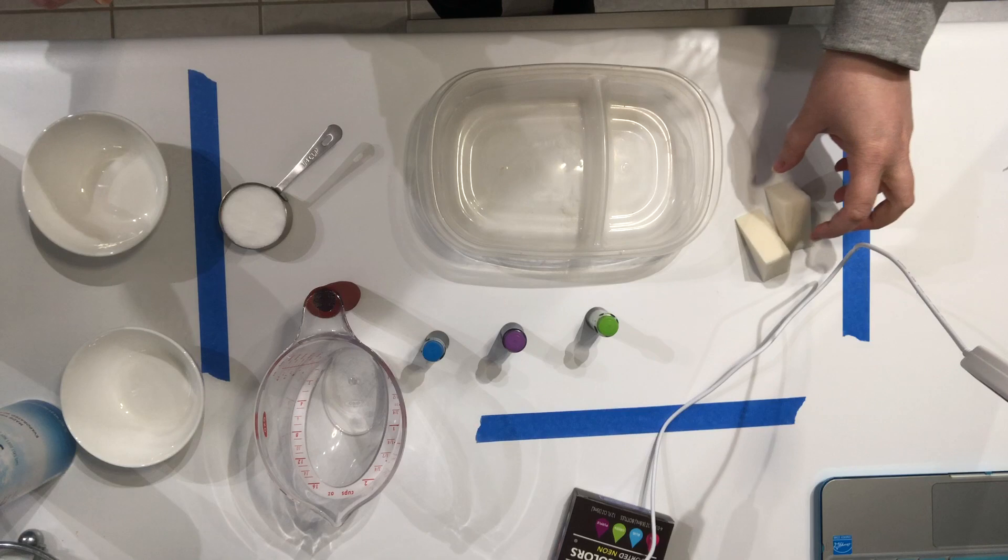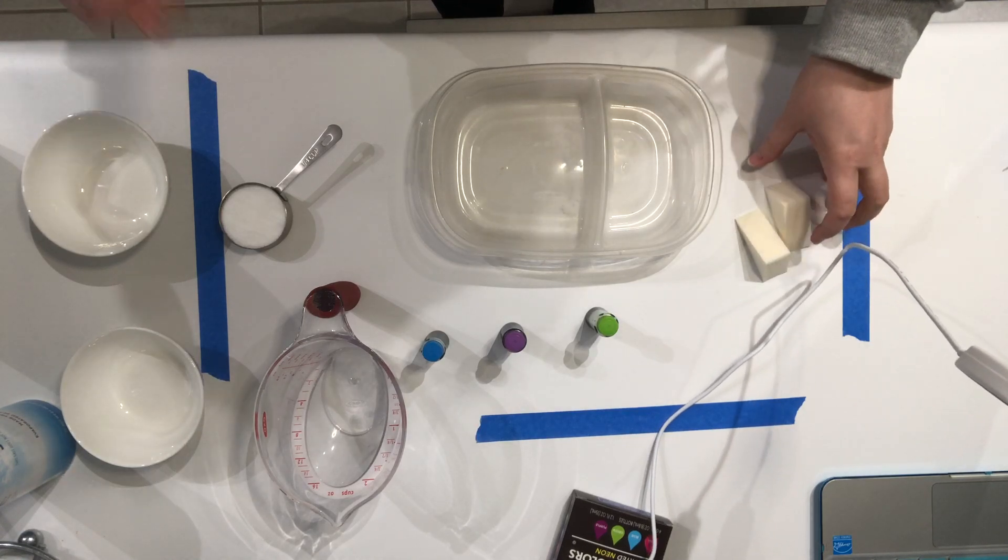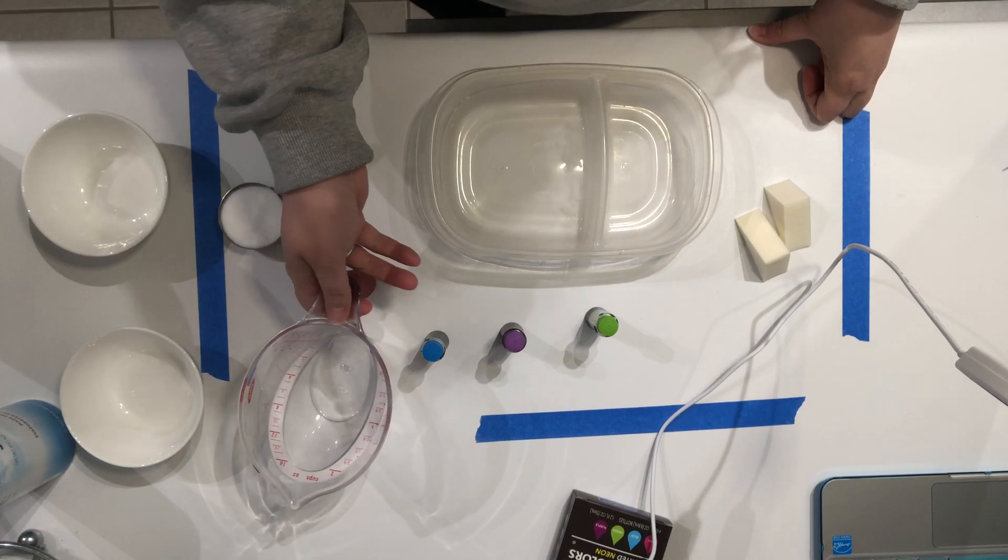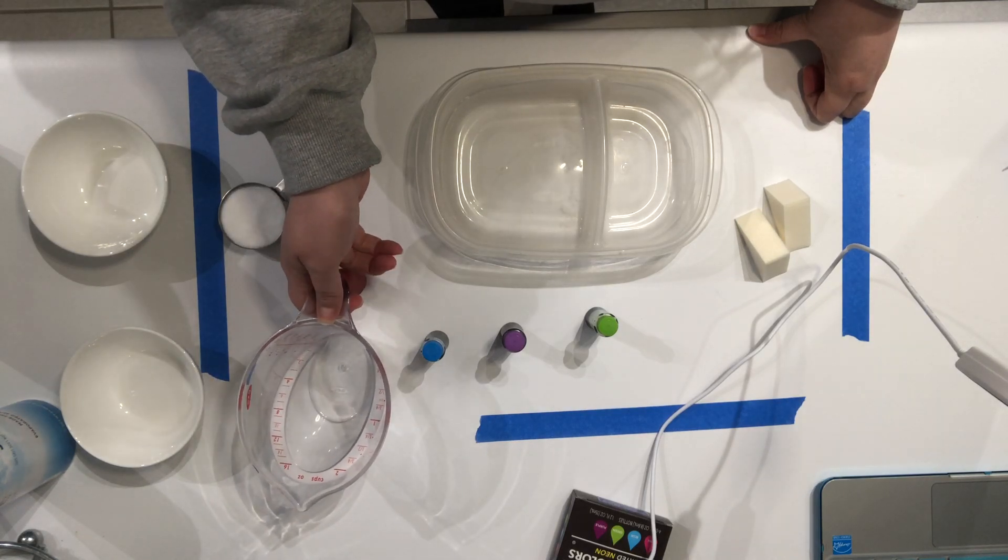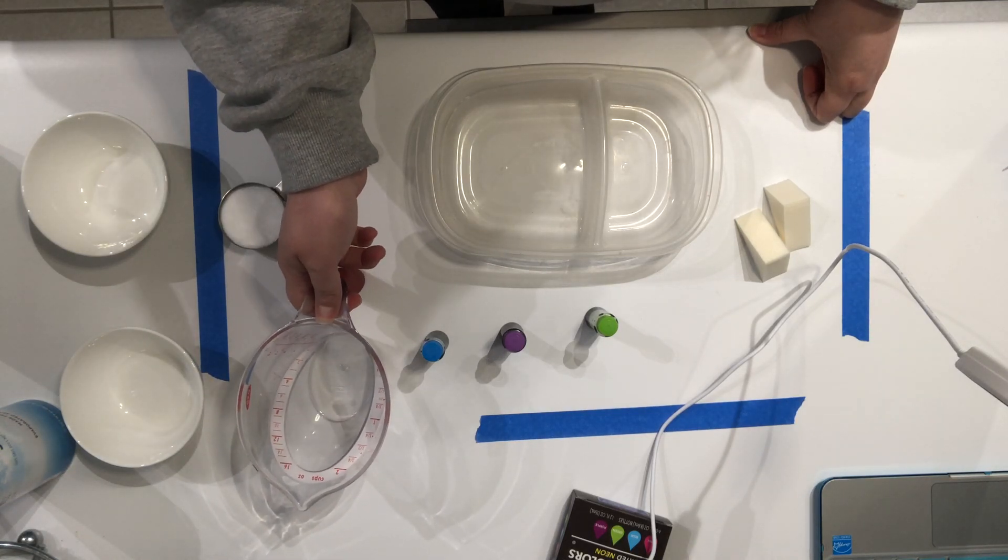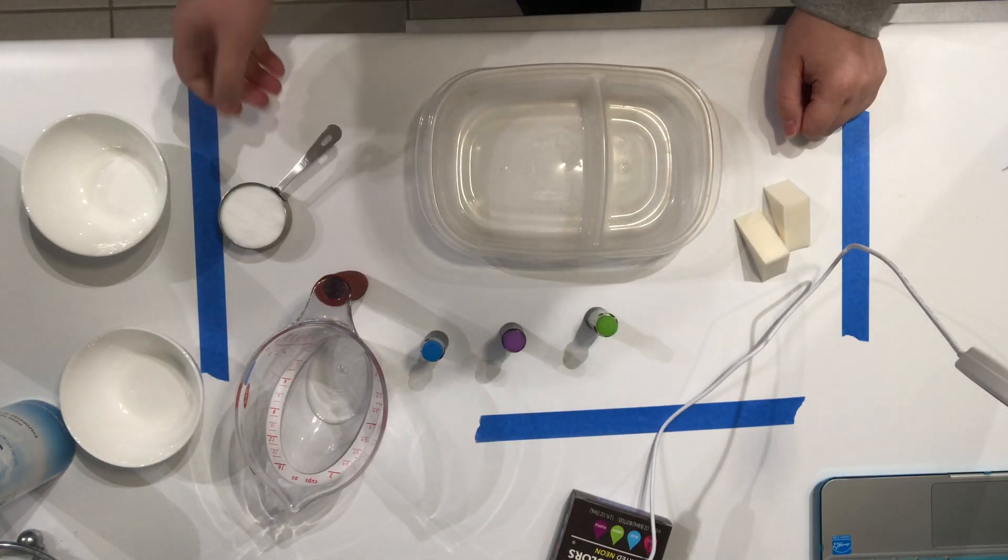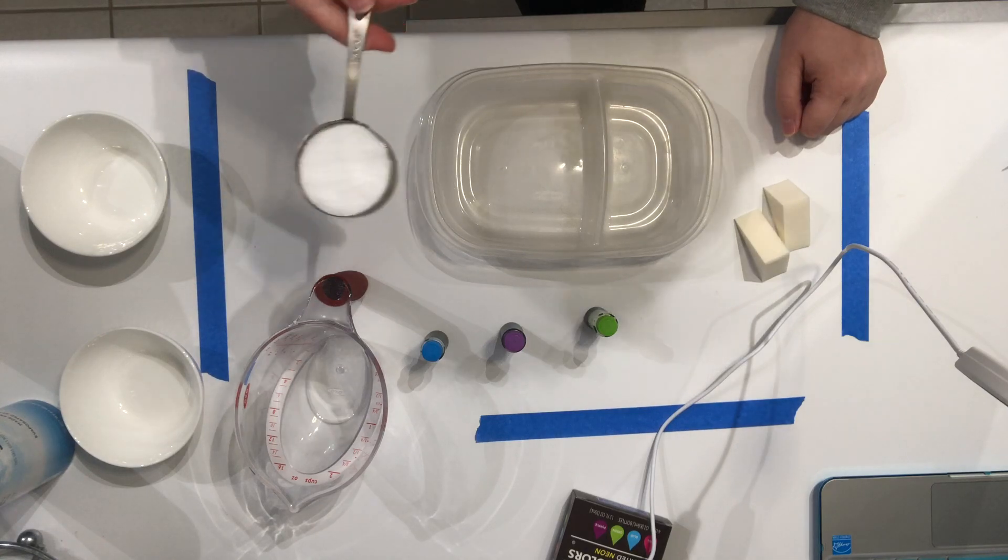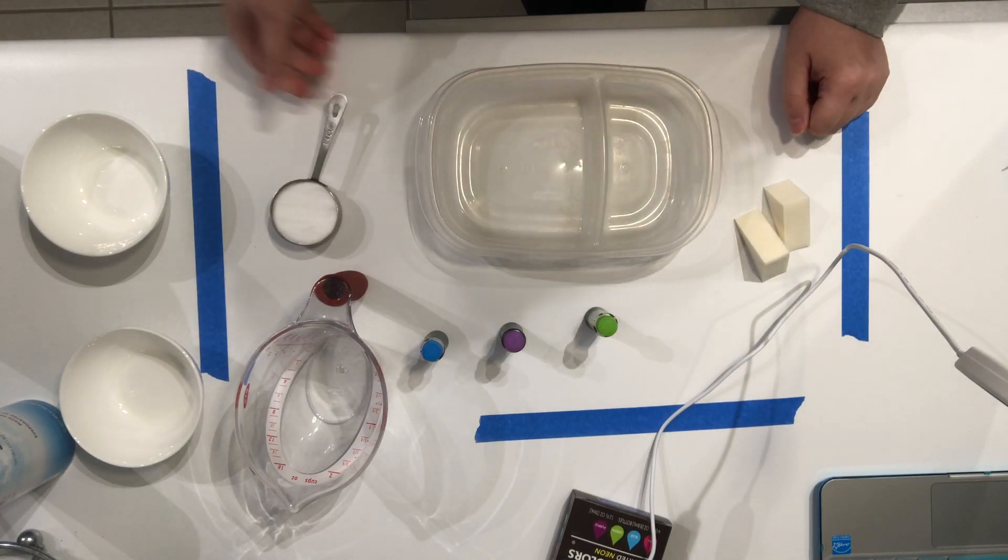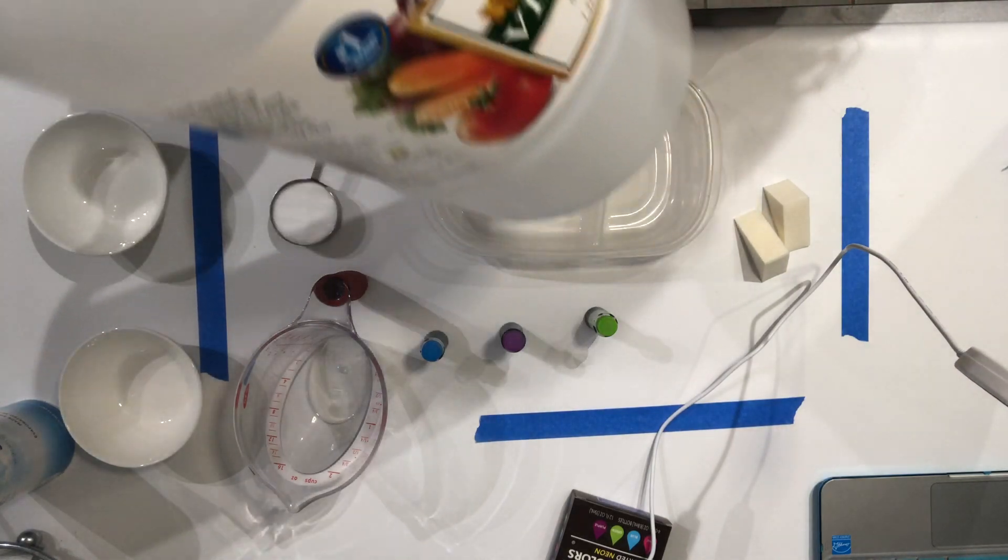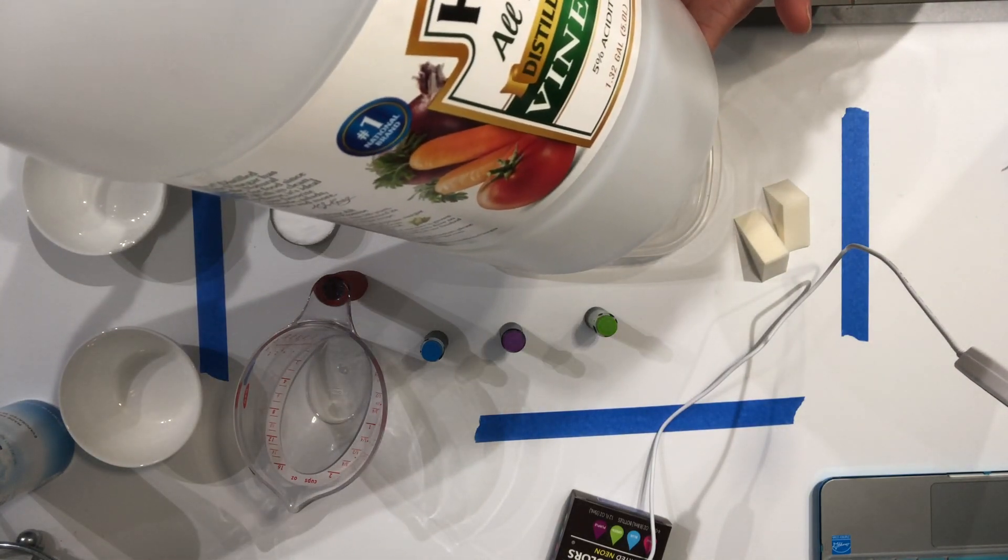To make salt and vinegar crystals, you are going to need a cup of hot water, preferably boiling, but ask a parent before you use the stove please. You are going to need a fourth cup of salt, and you are going to need some vinegar. We're going to use two teaspoons of vinegar.